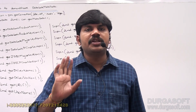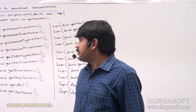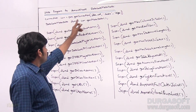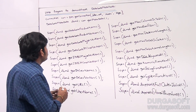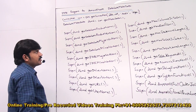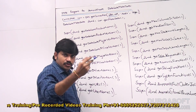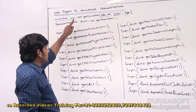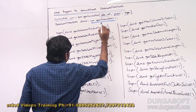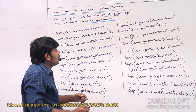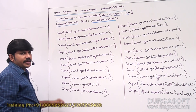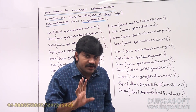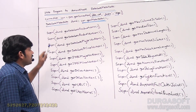Now let me demonstrate with an executable program to show the complete picture of JDBC database metadata. In the demo program, the first step is creating the connection object: Connection con = DriverManager.getConnection(jdbc_url, 'scott', 'tiger'). On the connection object we call con.getMetaData() to get the DatabaseMetaData object.